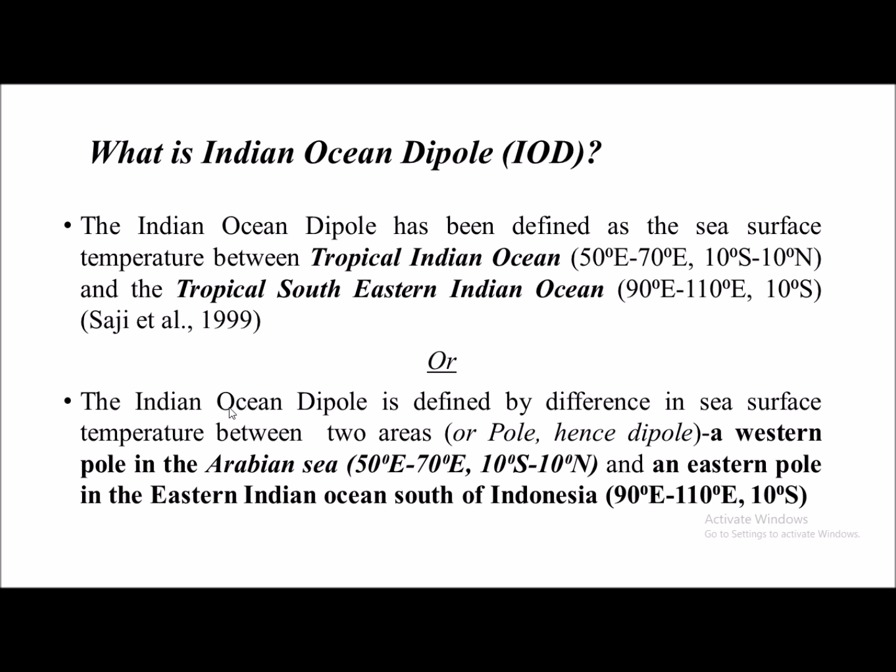The western pole is located in the Arabian Sea, ranging from 50°E to 70°E and 10°S to 10°N in the western Indian Ocean. The eastern pole is located in the eastern Indian Ocean, south of Indonesia, between 90°E to 110°E and around 10°S. Importantly, the IOD involves only the western Indian Ocean and the southeastern Indian Ocean — there is nothing related to the Bay of Bengal part of the Indian Ocean.